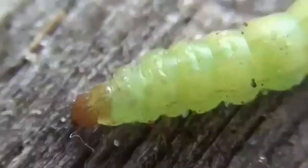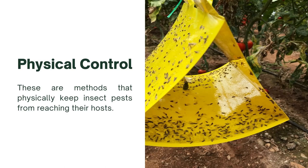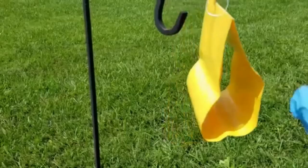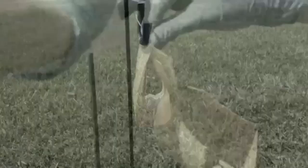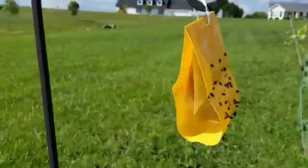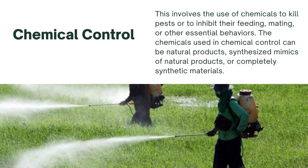The third control is physical control. These methods keep insect pests from reaching their host. As seen in pictures, there are insect traps that act as barriers. Various types of traps can be used for monitoring and controlling pests, such as blue boards. Other physical controls include plant covers to keep plants or crops healthy, and using pheromones in plastic bottles. The last control is chemical control — using chemicals to kill pests.